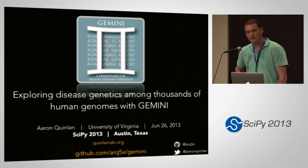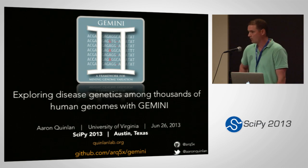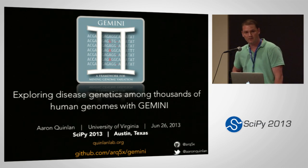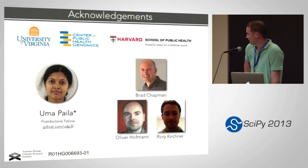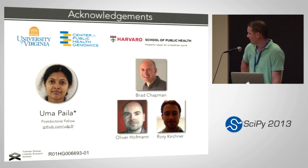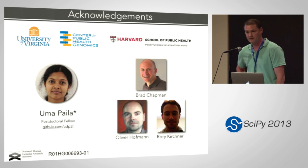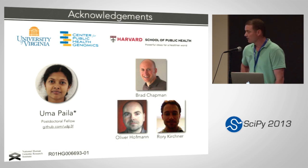Gemini is a framework based on Python for exploring genetic variation among thousands of genomes in the context of population genetics or disease traits. Before I go into what the tool is, I just want to acknowledge Uma Pila, a postdoc in my lab who's been leading this effort, and a really great collaboration with Brad Chapman, Roy Kirshner, and Oliver Hoffman at Harvard. It's been a great collaboration.